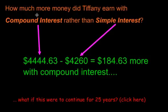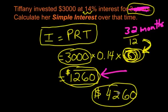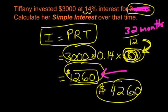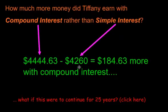So how much more did Tiffany earn with compound interest rather than simple interest? Well, remember, the compound interest gave us this much money, right? And the simple interest, if you remember way back here, the simple interest gave us, see that 4260 right there? It gave us that. And there it is. What's the difference between these two numbers? Well, she made $184.63 more with compound interest. It doesn't sound like a lot of money. You might be saying, well, compound interest doesn't really give you that much more.